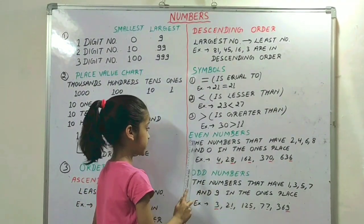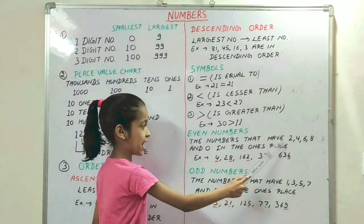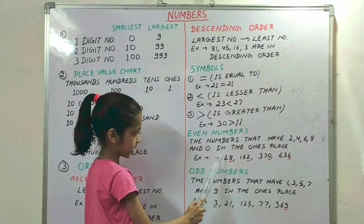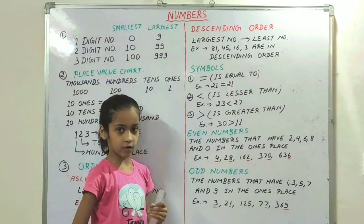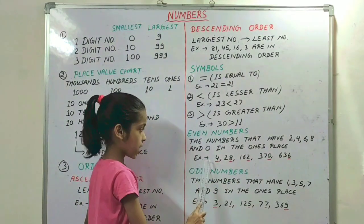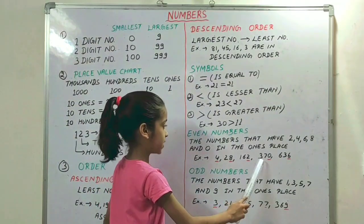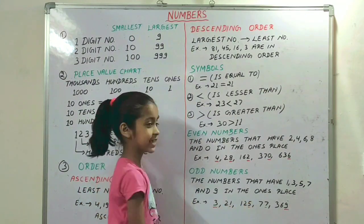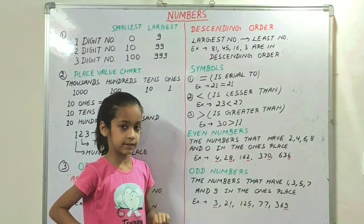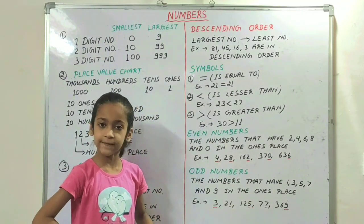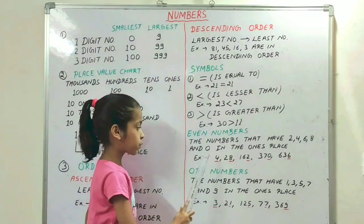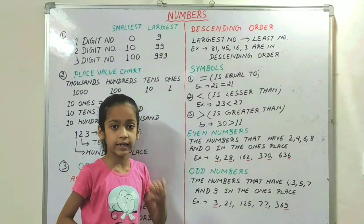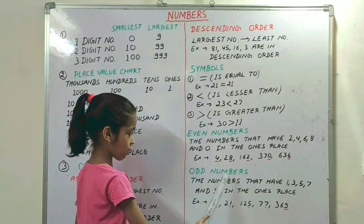Our next basic is even numbers. The numbers that have 2, 4, 6, 8, or 0 in the ones place are called even numbers. Example: 4, 28, 162, 376, 36. You can see that 4, 8, 2, 0, and 6 are in the ones place, so we call these even numbers. You only have to check the digit at the ones place to decide if a number is even or odd.